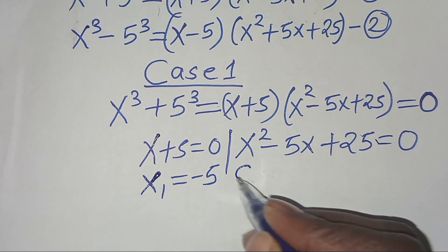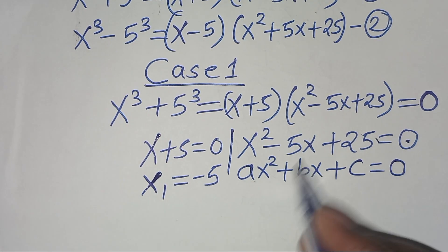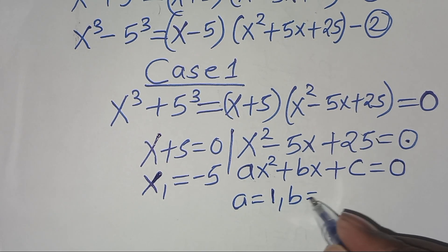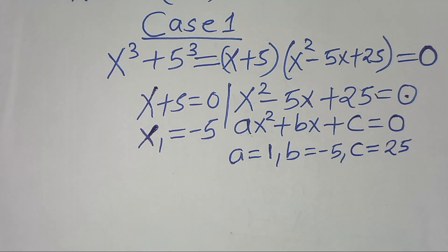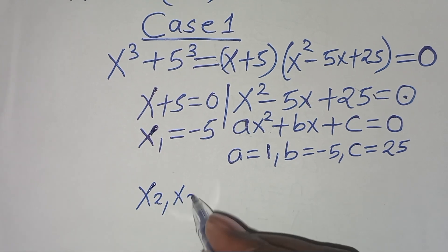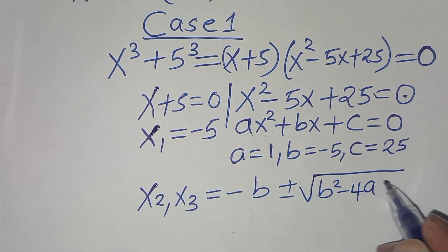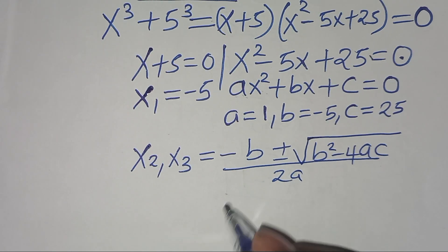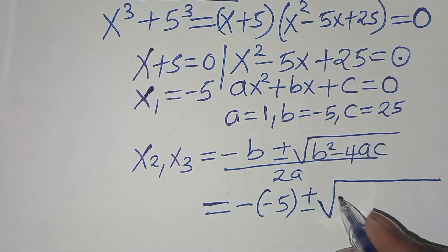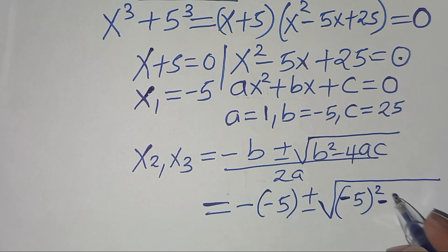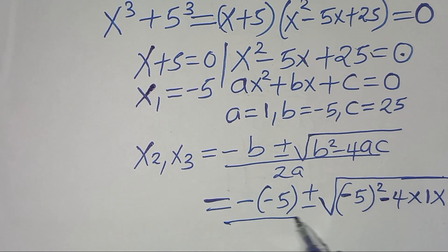The second part is a quadratic equation of the form ax squared plus bx plus c equals 0. From this, a equals 1, b equals minus 5, and c equals 25. We solve for x2 and x3 by applying the quadratic formula: minus b plus or minus the square root of b squared minus 4ac, all divided by 2a. Substituting gives minus(minus 5) plus or minus the square root of (minus 5) squared minus 4 times 1 times 25, all divided by 2.